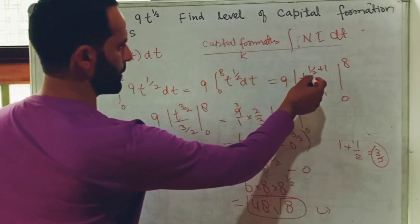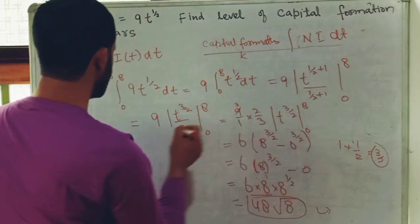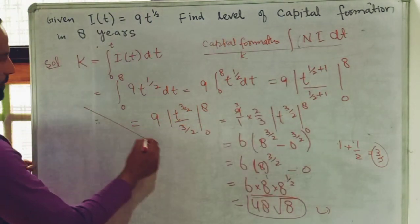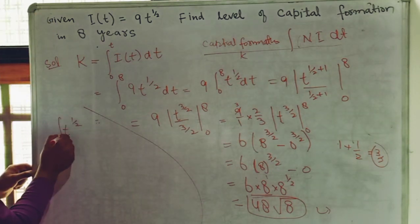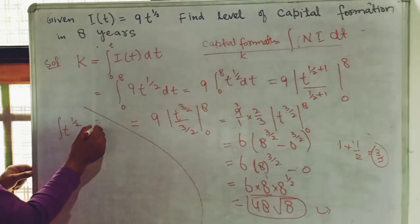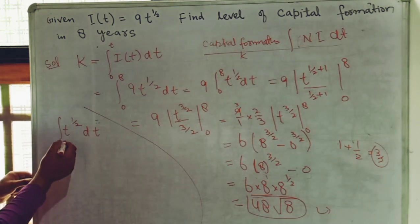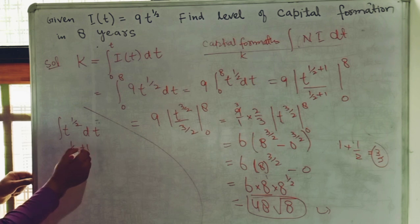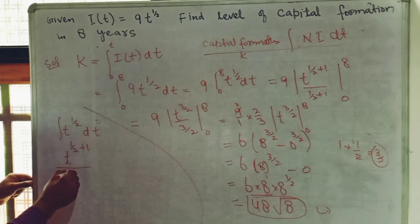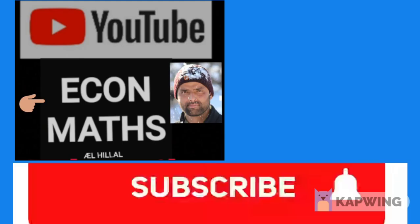I hope I made myself clear. To repeat the power function rule: for t^(1/2), we integrate with respect to time to get t^(1/2 + 1) divided by (1/2 + 1), which gives t^(3/2) divided by (3/2).